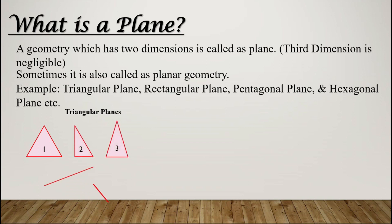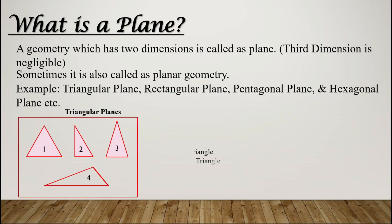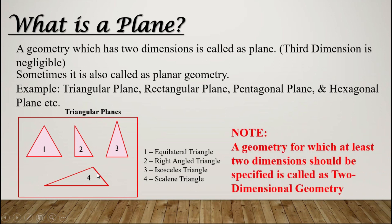A triangular plane can be of different shapes. The first is the equilateral triangle, where all three sides are equal and the included angle is the same — that is 60 degrees. The second is a right angle triangle. The third is an isosceles triangle, where two sides are the same. The fourth is a scalene triangle, where all three sides are different.